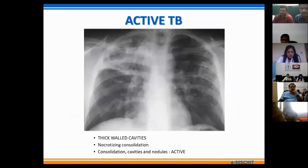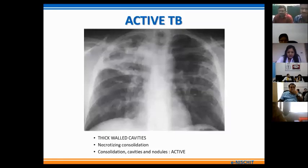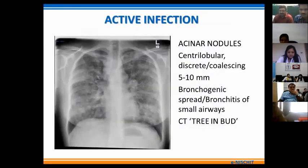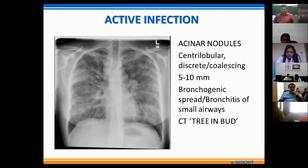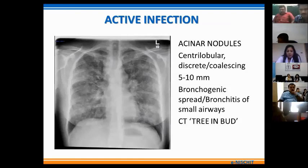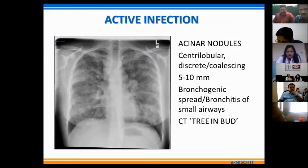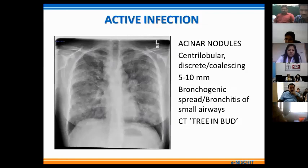This slide again shows the presence of consolidation in the right upper and mid zone with some infiltration in the left lung field also. Another common manifestation of active tuberculosis is the presence of acinar nodules — ill-defined fluffy nodular opacities with a tendency to coalesce, representing the bronchogenic spread of disease. In the chest X-ray, multiple fluffy tiny variable-size nodular densities are shown. On CT, they are seen as areas of tree-in-bud.